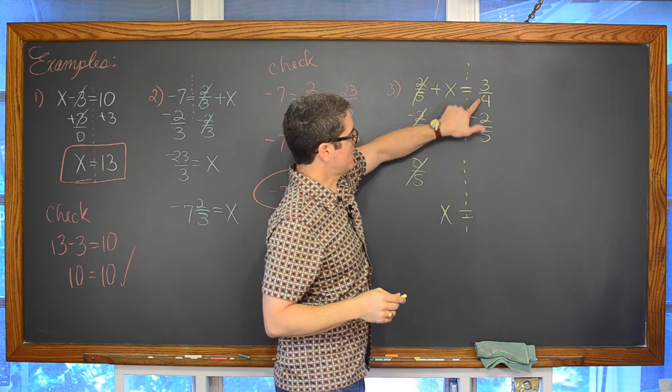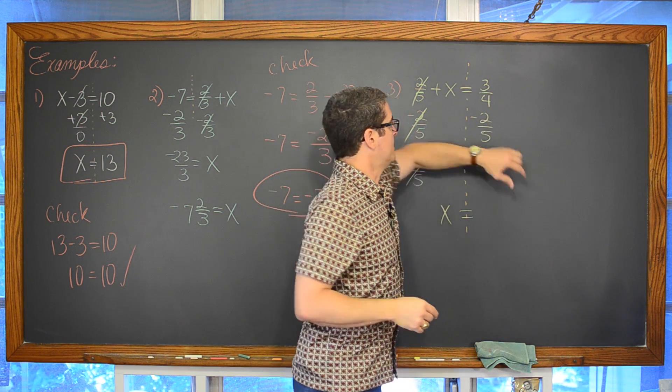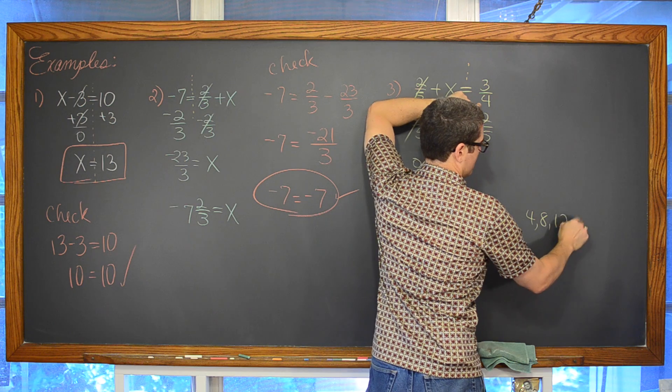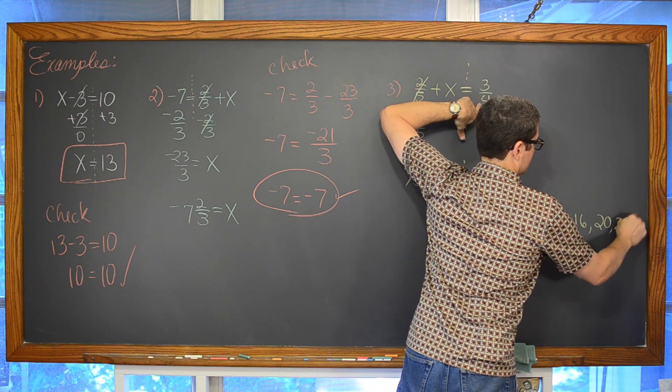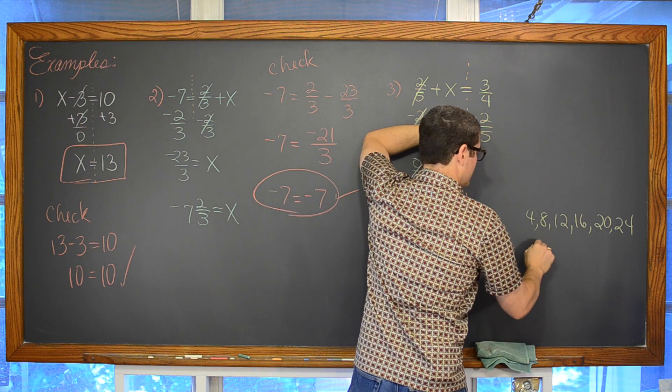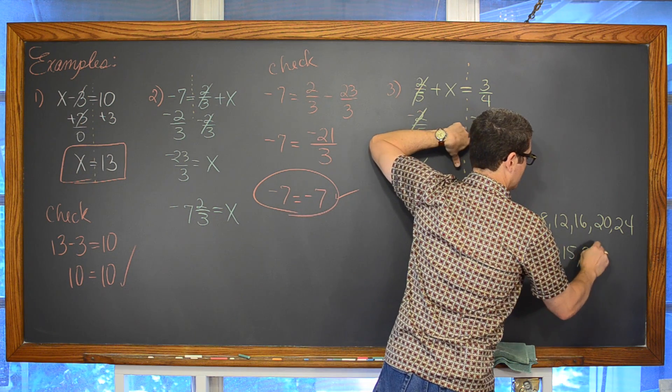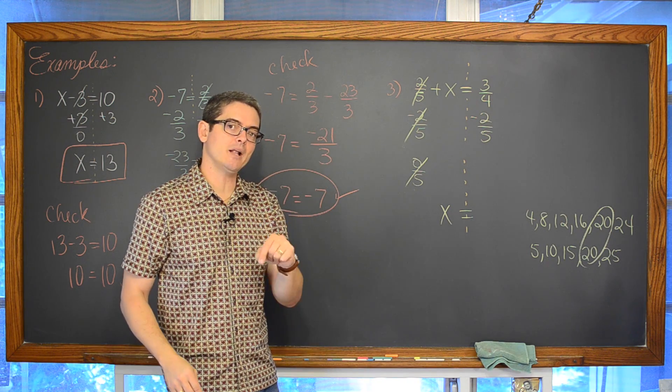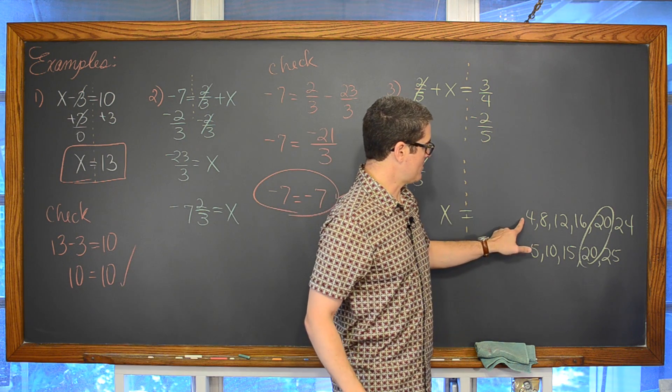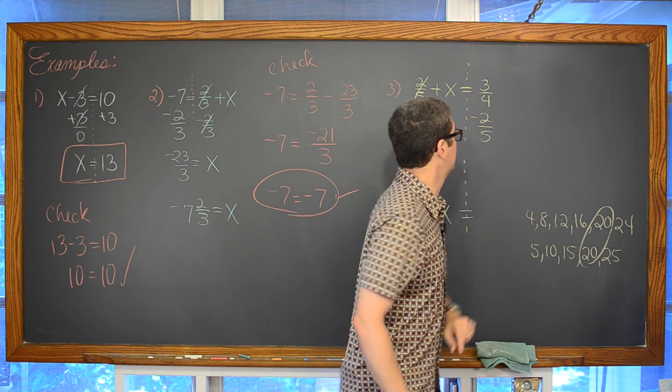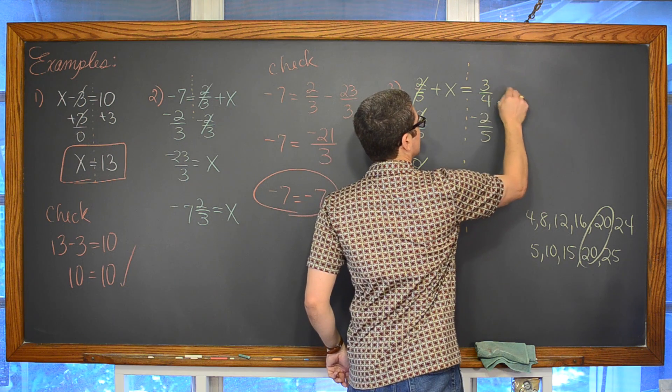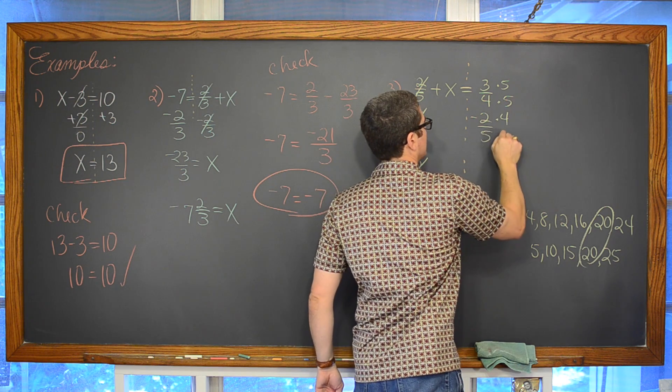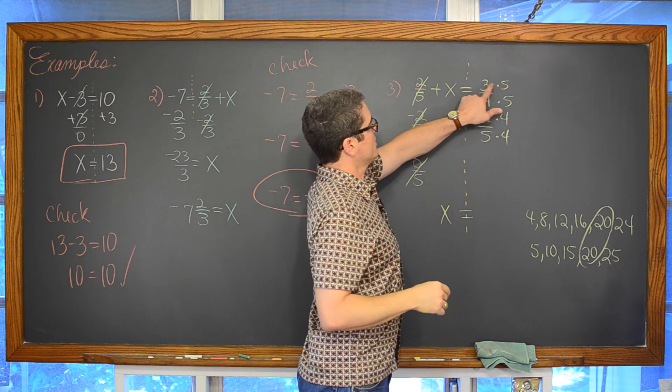We do not have common denominators, but I have plenty of room to write here. So I am going to take multiples of 4: 4, 8, 12, 16, 20, 24. Multiples of 5: 5, 10, 15, 20, 25. There is my lowest common multiple. My LCM. 4 needs to get multiplied by 5. And 5 needs to get multiplied by 4.